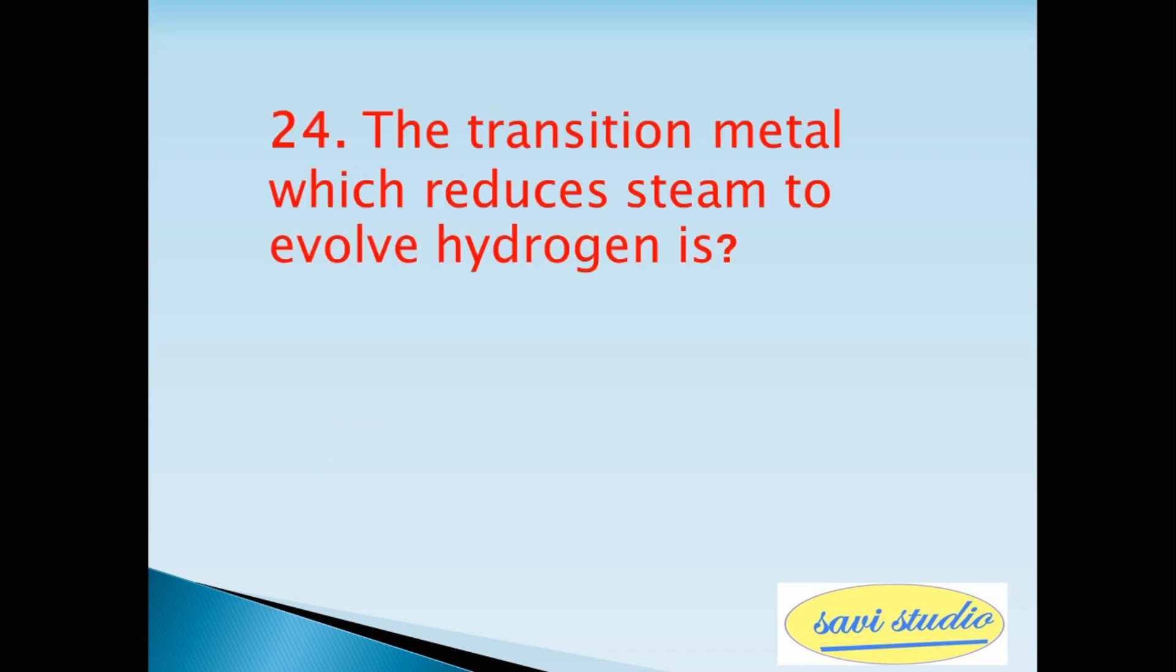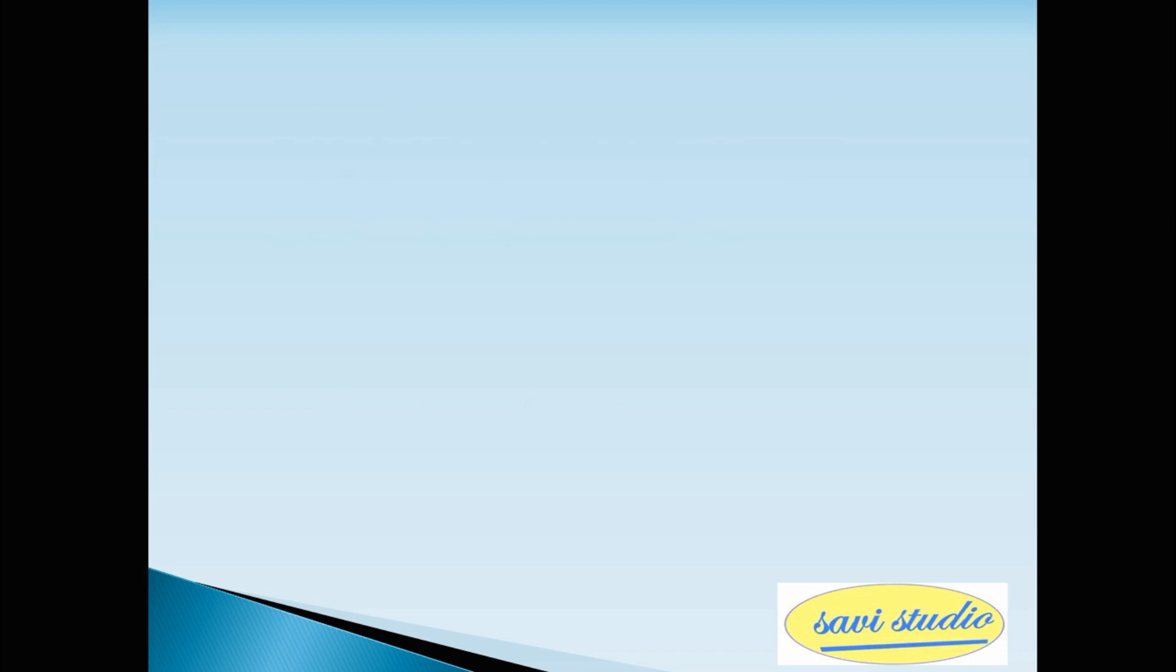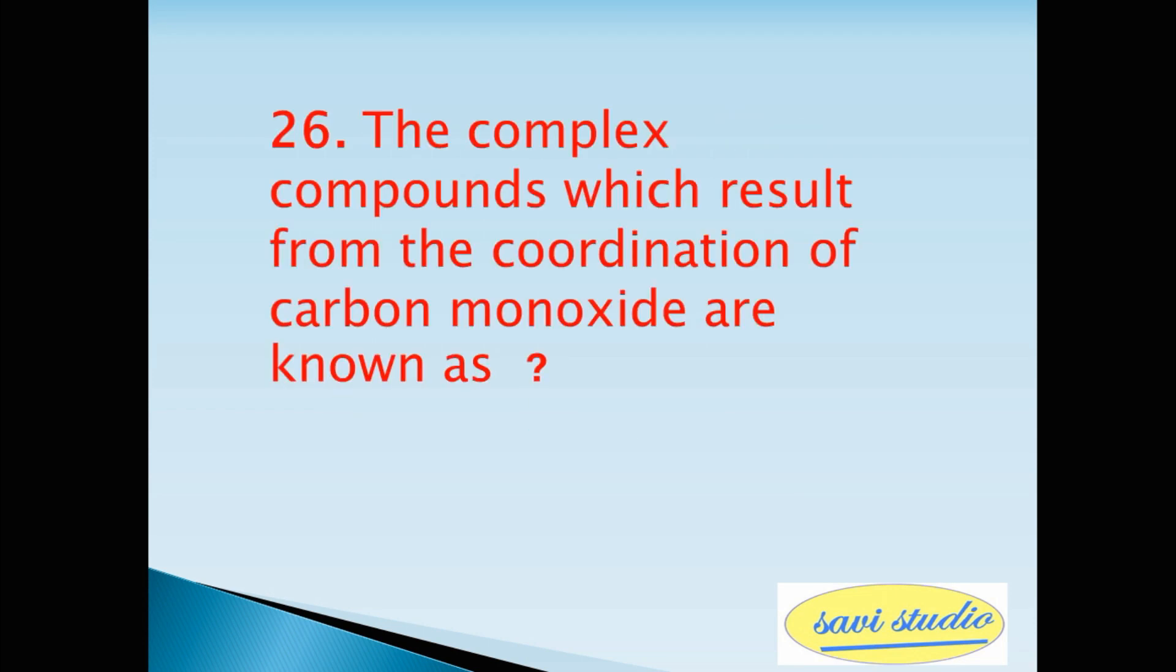Twenty-fourth question, the transition metal which reduces steam to evolve hydrogen is? Answer Iron. Twenty-fifth question, mercury fluoride is soluble in? Answer Ethanol. Twenty-sixth question, the complex compounds which result from the coordination of carbon monoxide are known as? Answer Carbonyls.